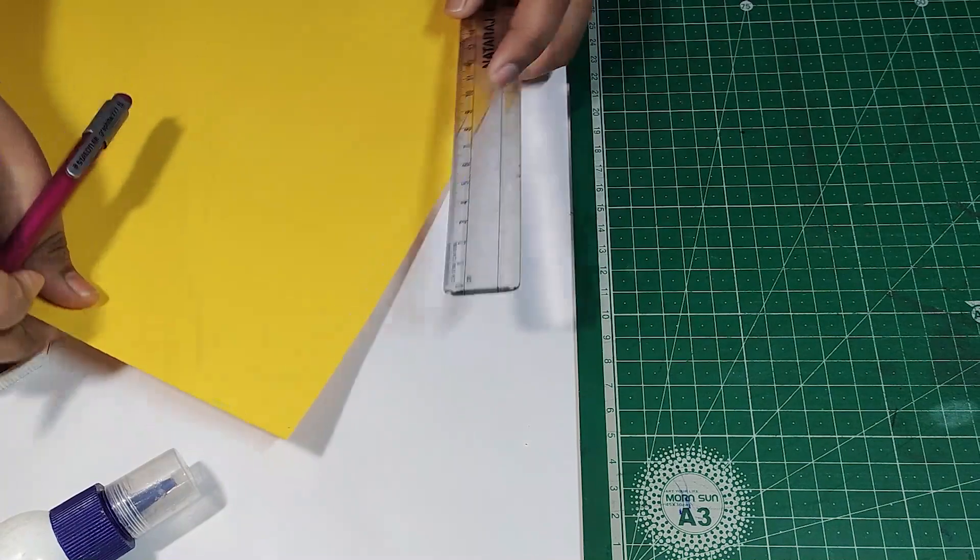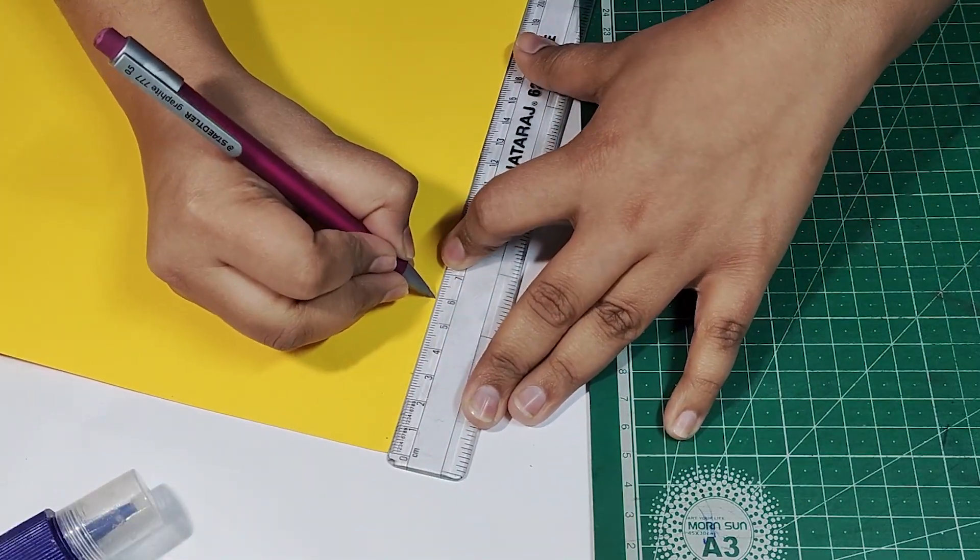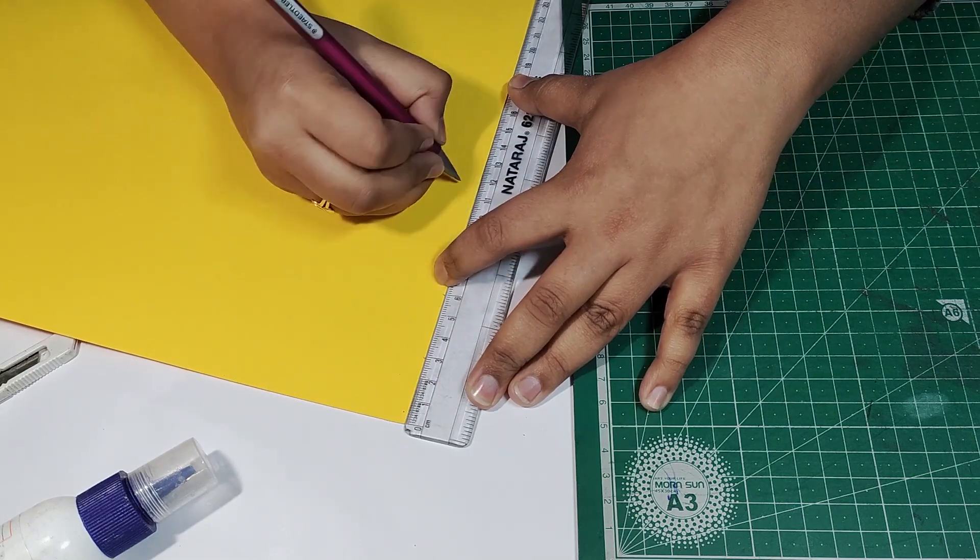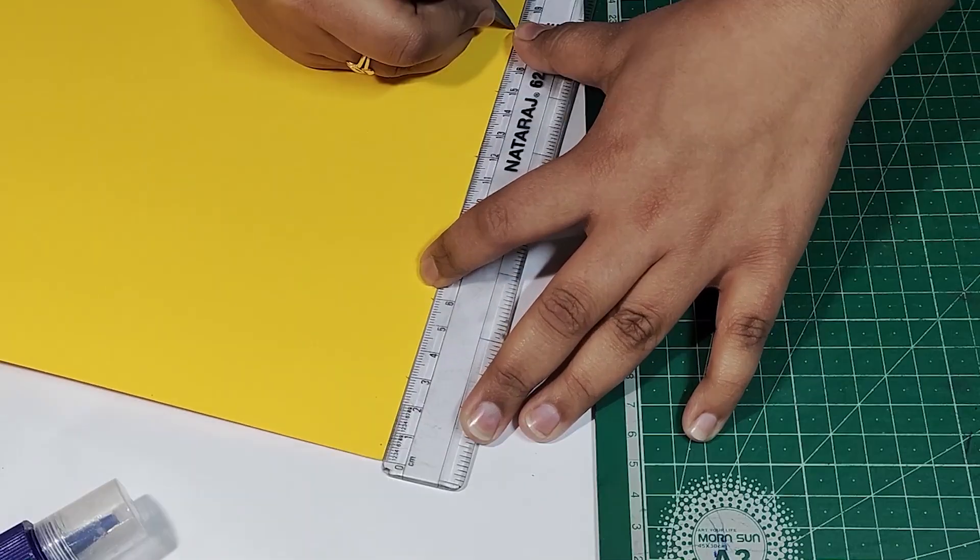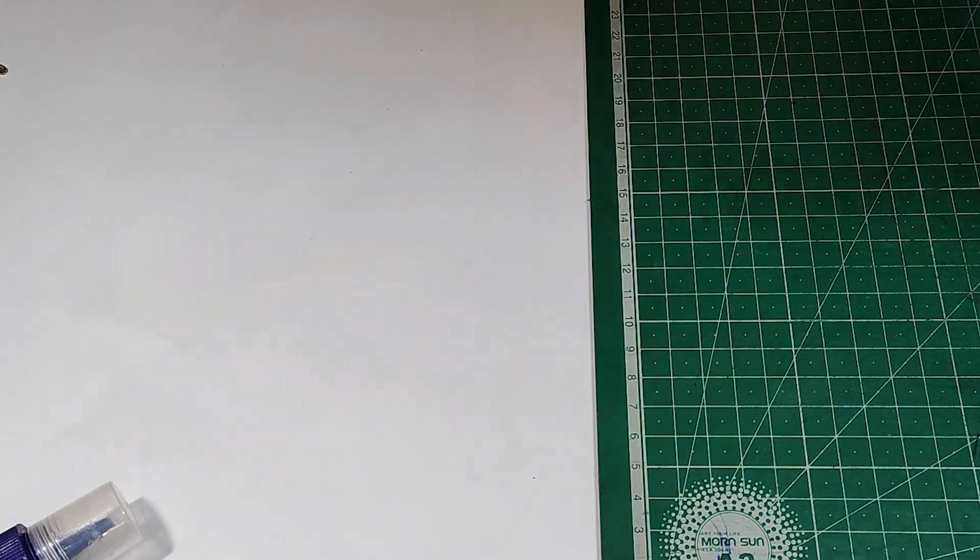The pencil box I am making will have a hexagonal shape, so I am marking 6 sides and one side will have a margin. If you want to make it square shaped, you can make four sides.